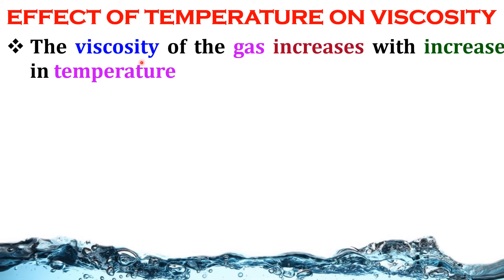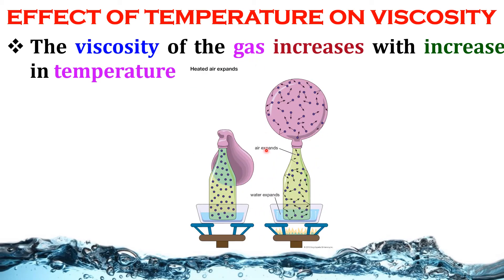The viscosity of gas increases with increase in temperature; temperature is directly proportional to viscosity if the fluid is gas. For example, consider a bottle fitted with a balloon. When it is heated, air starts to expand easily and the size of the balloon increases. This indicates that when there is a temperature rise, the viscosity of the gas also increases.